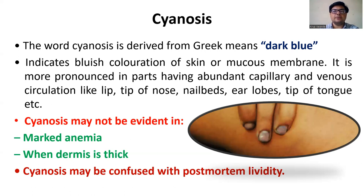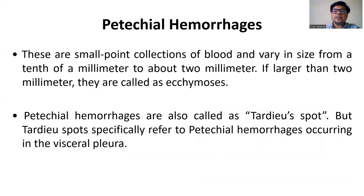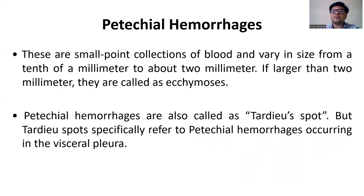Next one is petechial hemorrhages. These are small point collections of blood and may vary in size from a tenth of a millimeter to about two millimeters. If larger than two millimeters, they are called ecchymosis. Petechial hemorrhages are also called Tardieu spots, but Tardieu spots specifically refer to petechial hemorrhages occurring in the visceral pleura.